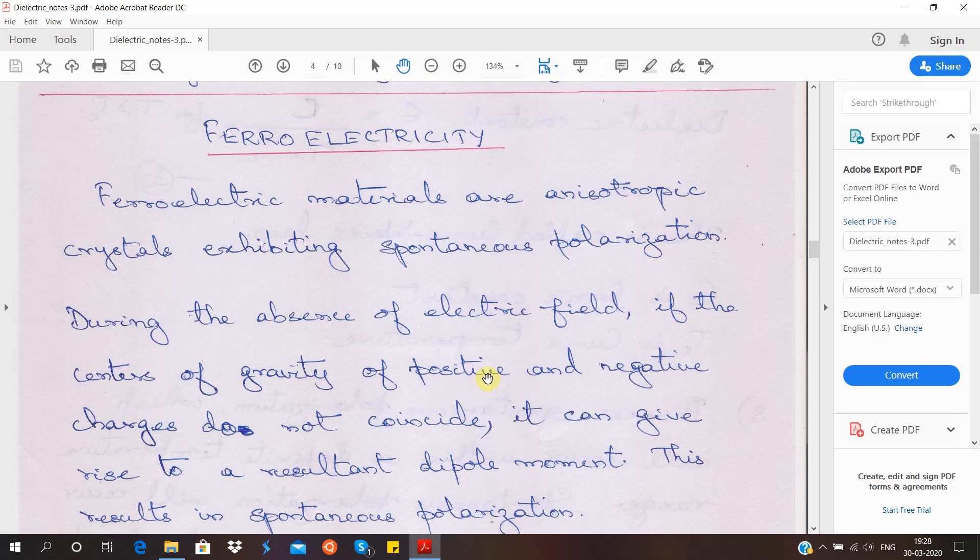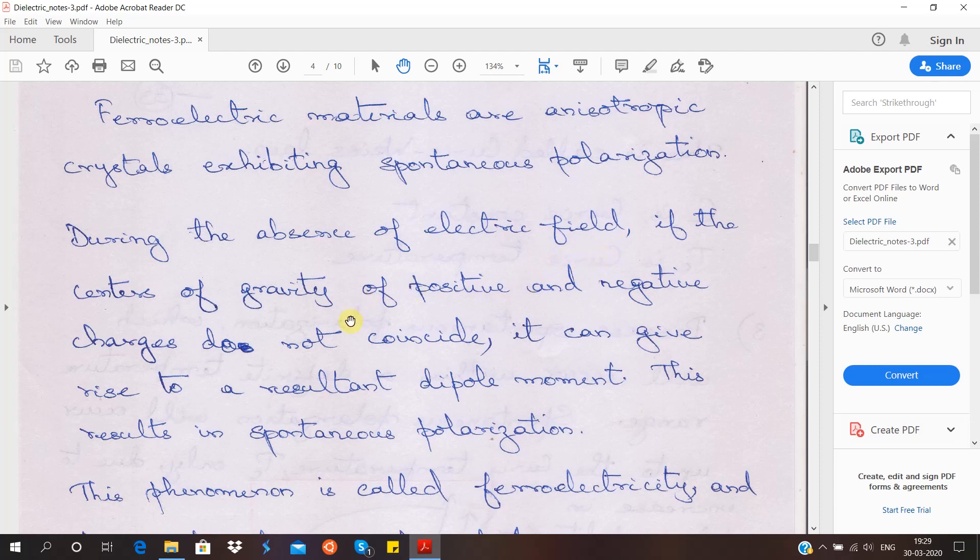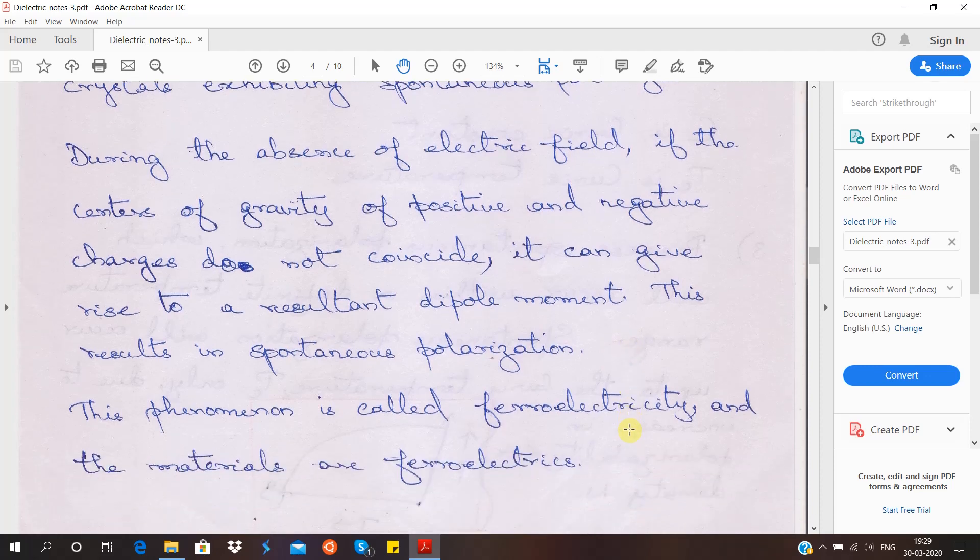Welcome to the fourth lecture on this series on dielectrics. We are moving further with a concept called ferroelectricity. Ferroelectric materials are those which have spontaneous polarization. That means the polarization already exists within them, even inherently. When there is an absence of electric field, the centers of gravity of the positive and negative charges do not coincide. So they always have a dipole moment, resulting in spontaneous polarization. We call this phenomena ferroelectricity, and the materials exhibiting this phenomena are ferroelectrics.